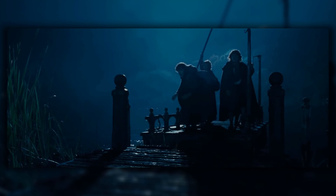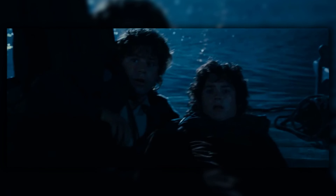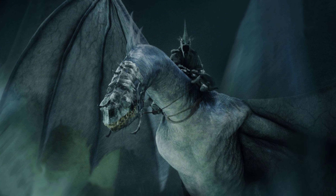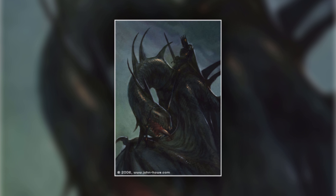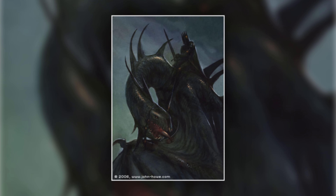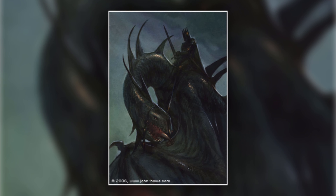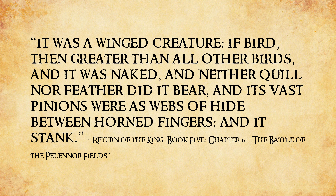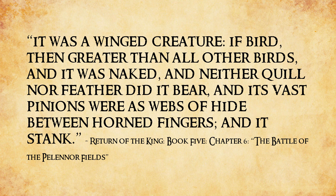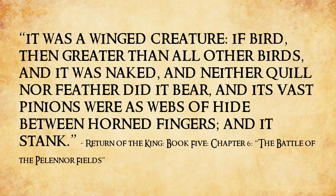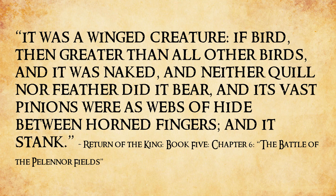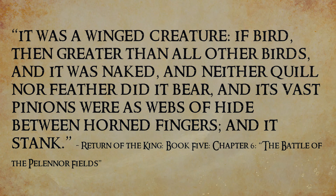Horses were not a good enough source of transportation — not only could they not seem to keep up, they lost their horses when trying to reach Frodo later on. So they started flying on these dragon-like creatures called Fell Beasts, though they are described to be more like birds — giant, featherless, smelly birds to be more precise. As Tolkien wrote: 'It was a winged creature, if bird, then greater than all birds, and it was naked, and neither quill nor feather did it bear, and its vast pinions were as webs of hide between horned fingers, and it stank.'